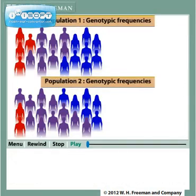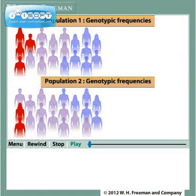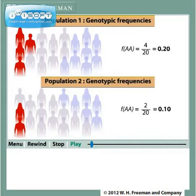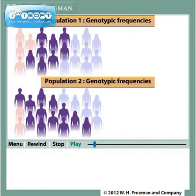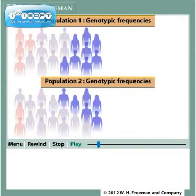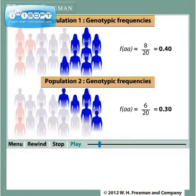Body color is determined by the big A and little a alleles. Big A homozygotes are red and are present at a frequency of 0.2 in population 1 and 0.1 in population 2. Heterozygotes are purple and are present at a frequency of 0.4 in population 1 and 0.6 in population 2. Little a homozygotes in blue are present at a frequency of 0.4 in population 1 and 0.3 in population 2.